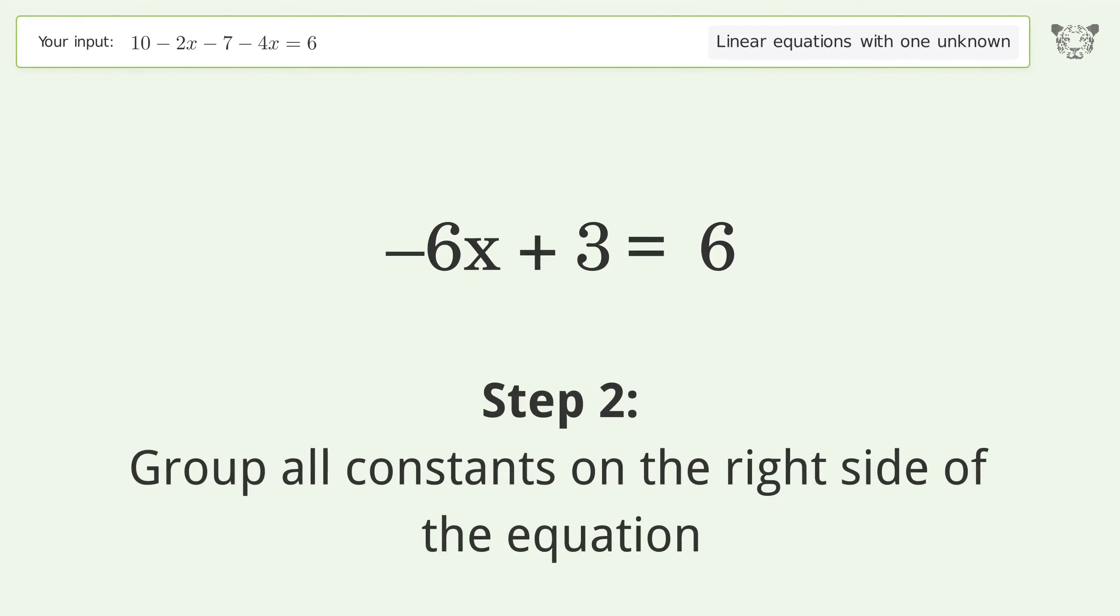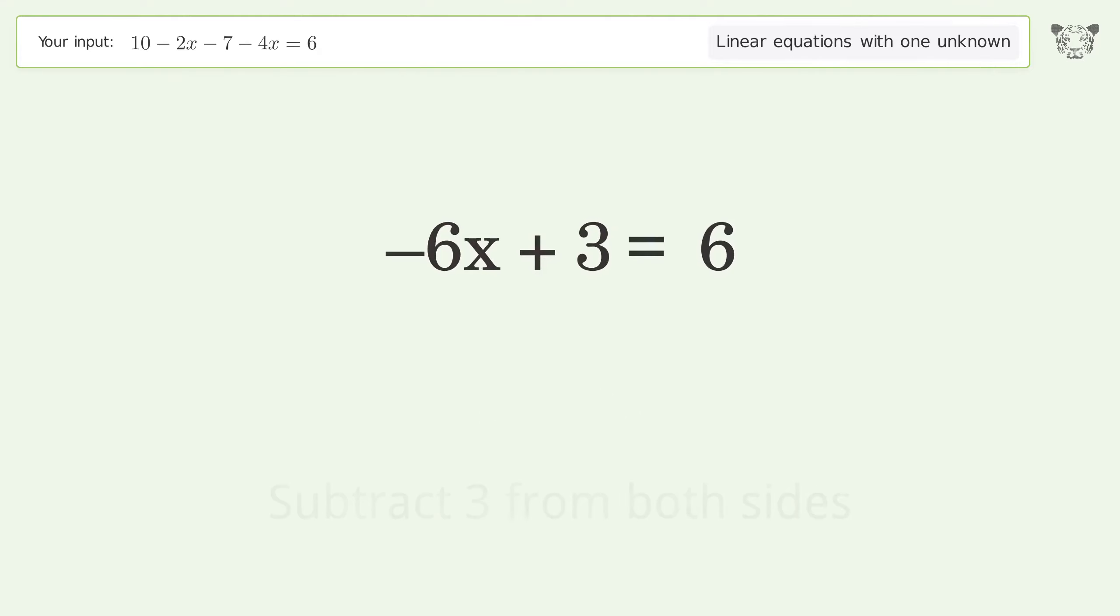Group all constants on the right side of the equation. Subtract three from both sides. Simplify the arithmetic.